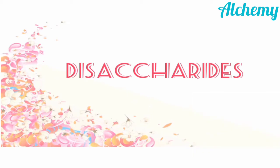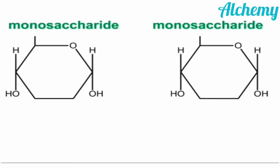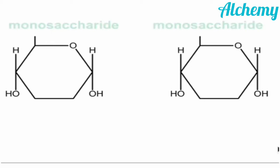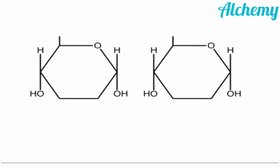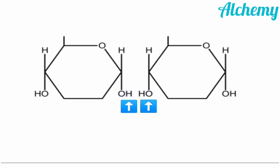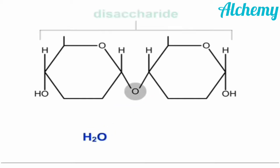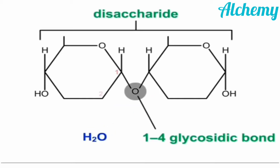A disaccharide is formed by the combination of two monosaccharides. In this process, H from one monosaccharide combines with OH of the other monosaccharide, forming a water molecule which gets eliminated, resulting in an oxide linkage called glycosidic linkage.